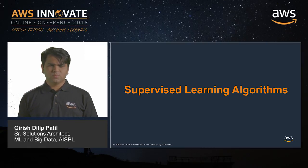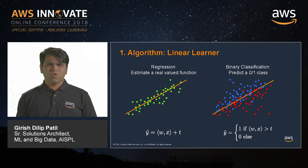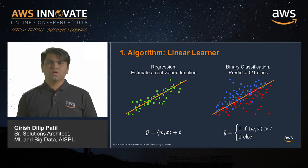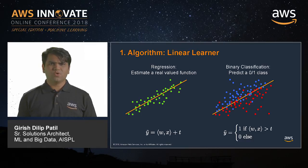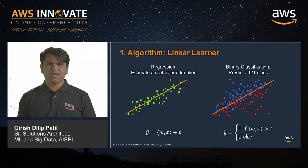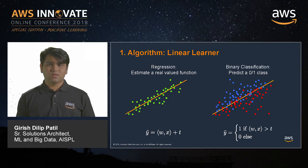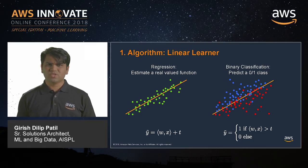The first algorithm is Linear Learner. It helps you with regression tasks and binary classification tasks. In regression tasks you are trying to predict a certain value — for example, the amount of discount to offer a customer or the raise needed to retain an employee. In binary classification you are trying to figure out yes/no type of answers, for example whether a customer is likely to leave your business. Linear Learner helps you in these scenarios.